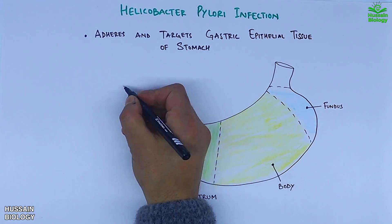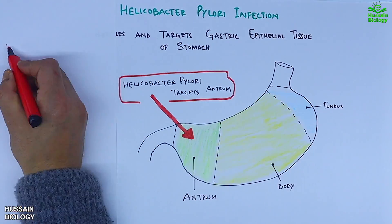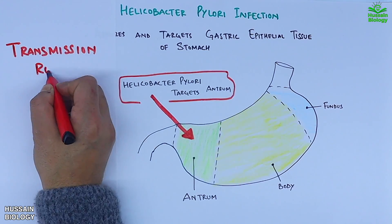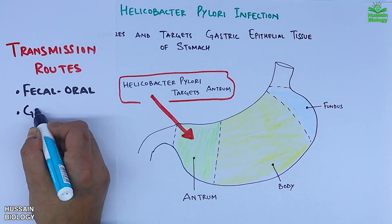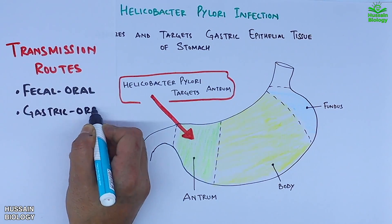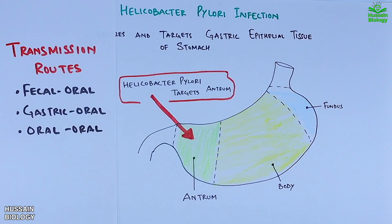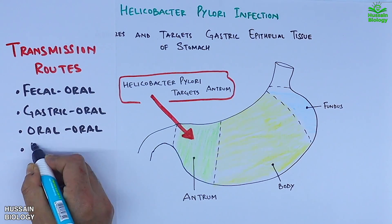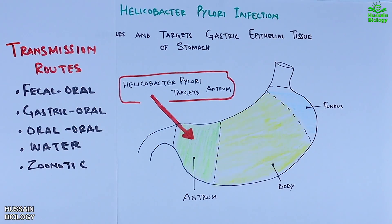The transmission routes include the fecal-oral route, gastric-oral route, oral-oral route, through water, or it may be zoonotic — that is, through animals. Now let's get to the virulence factors or proteins of Helicobacter pylori.